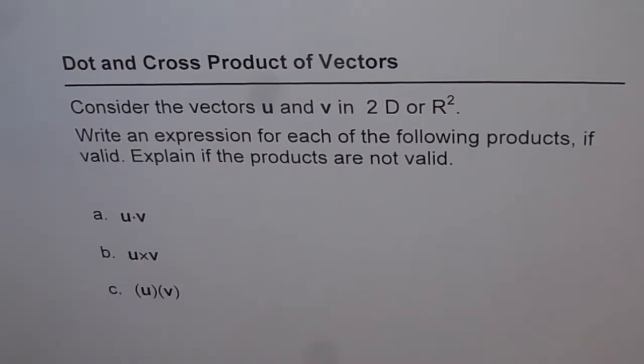The first one is u dot v. Second is u cross v. And the third one is u times v. Now write down the answer and then look into my suggestion. Take it as kind of a review test.